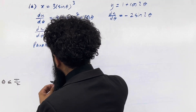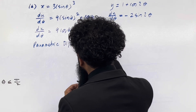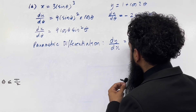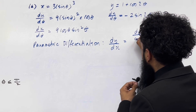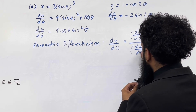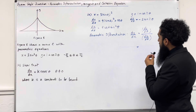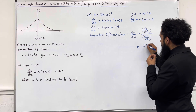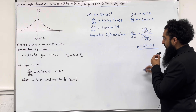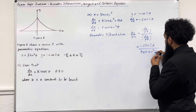For parametric differentiation, to work out the gradient function dy over dx, I simply do dy over d theta divided by dx over d theta. So I've got minus 2 sine 2 theta divided by 9 cos theta sine squared theta.